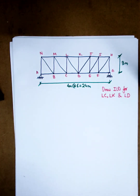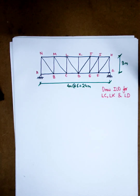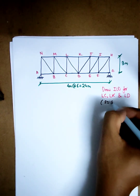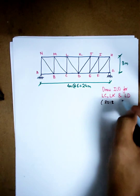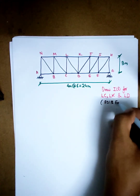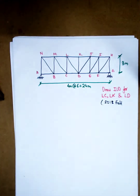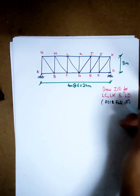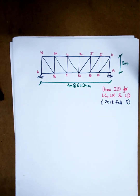This is the ILD option. This is the option of L2. 2018, fall, question number 5. This is the option of the loop.